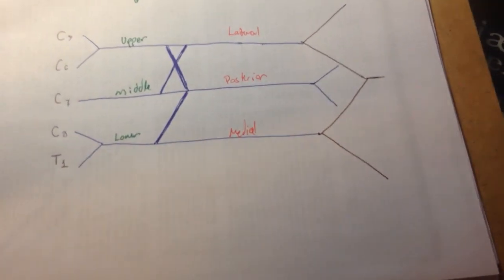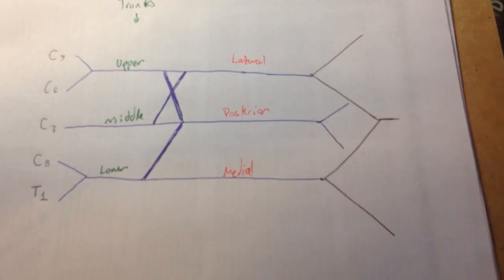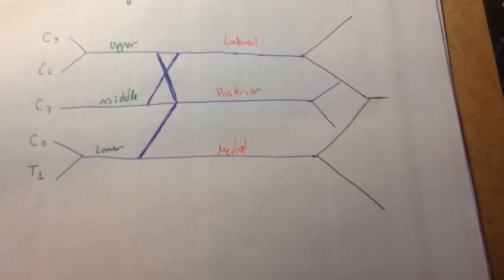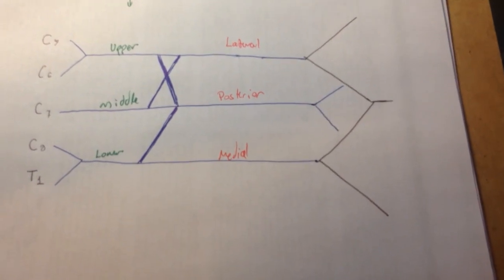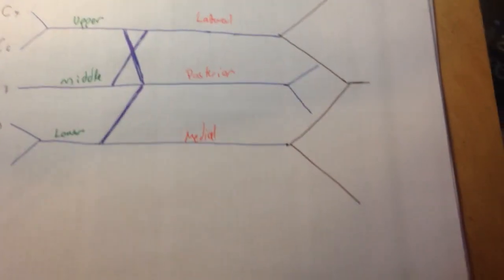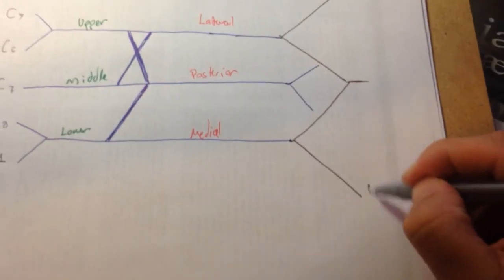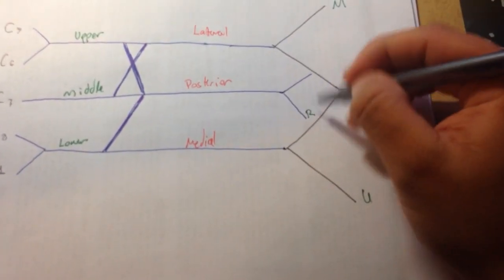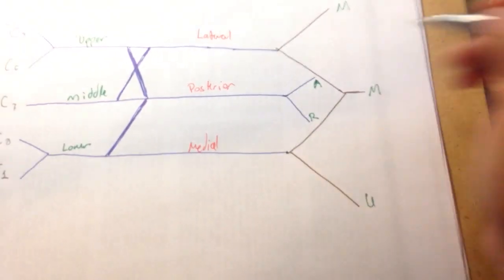Finally, we're going to go ahead and name the branches, which are the actual nerves of the brachial plexus. They're going to be named UMMRA. UMMRA. Very easily. Like this. UMMRA.